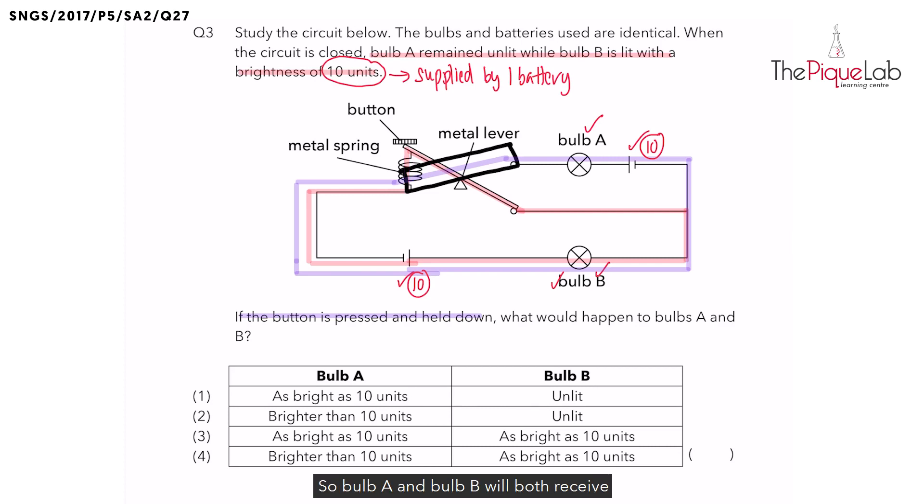So, bulb A and bulb B will both receive 10 units of electricity, allowing them to shine with a brightness of 10 units each, giving us the answer as option 3.